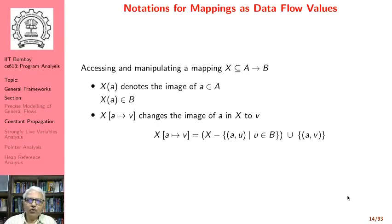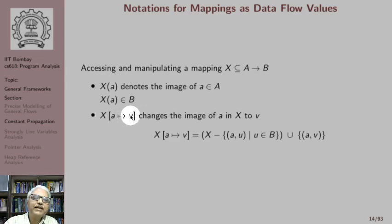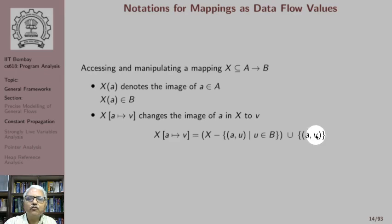To write the flow functions of constant propagation, it becomes much easier using a different notation. Given a mapping x which is a mapping from A to B, x(a) denotes the image of a. And x[a→v] changes the image of a in x to v — meaning if the value of a was u earlier, remove that and overwrite it with v. This is useful to model statements such as 'a = 5'.